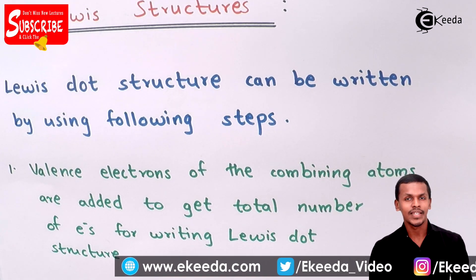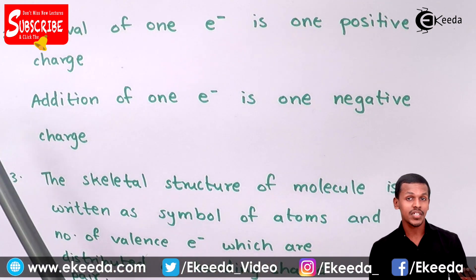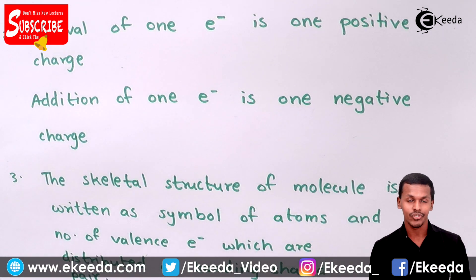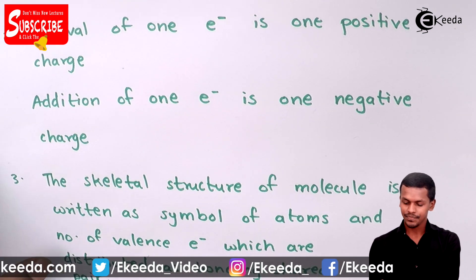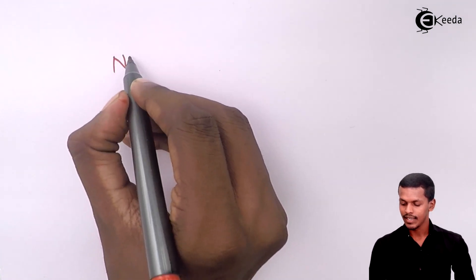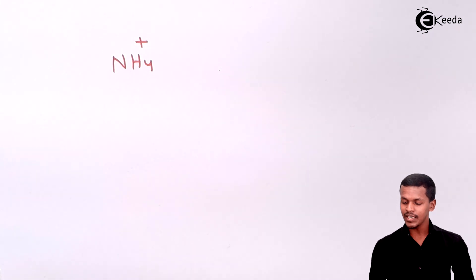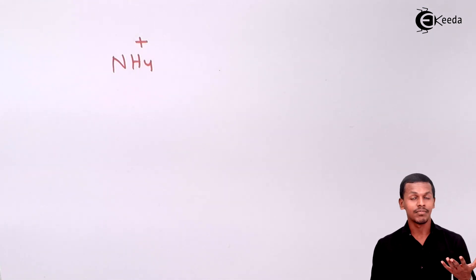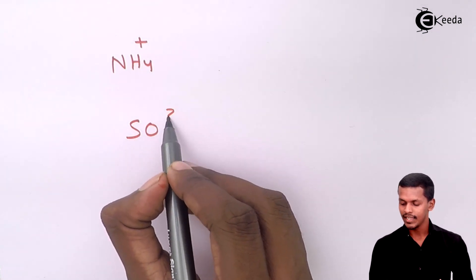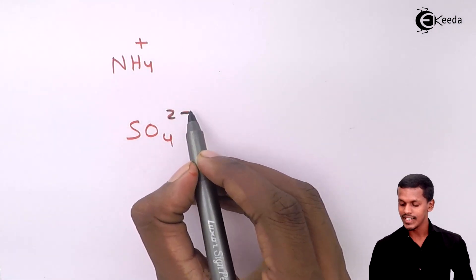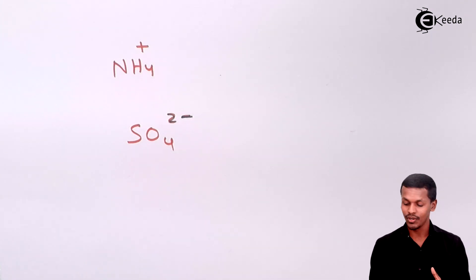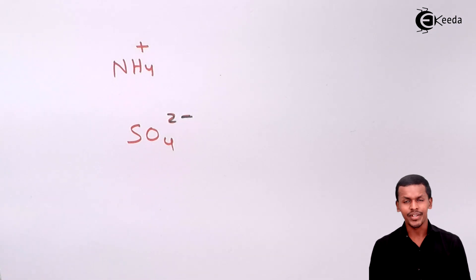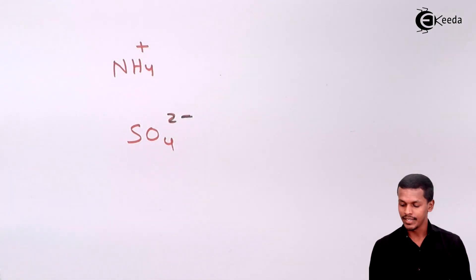The second point is: removal of one electron means one positive charge on the molecule, while addition of one electron means one negative charge. For example, NH₄⁺ indicates that one electron has been removed from that molecule. While for SO₄²⁻, the 2- charge indicates that two electrons have been added to the overall group, which is why it has a two-negative charge.